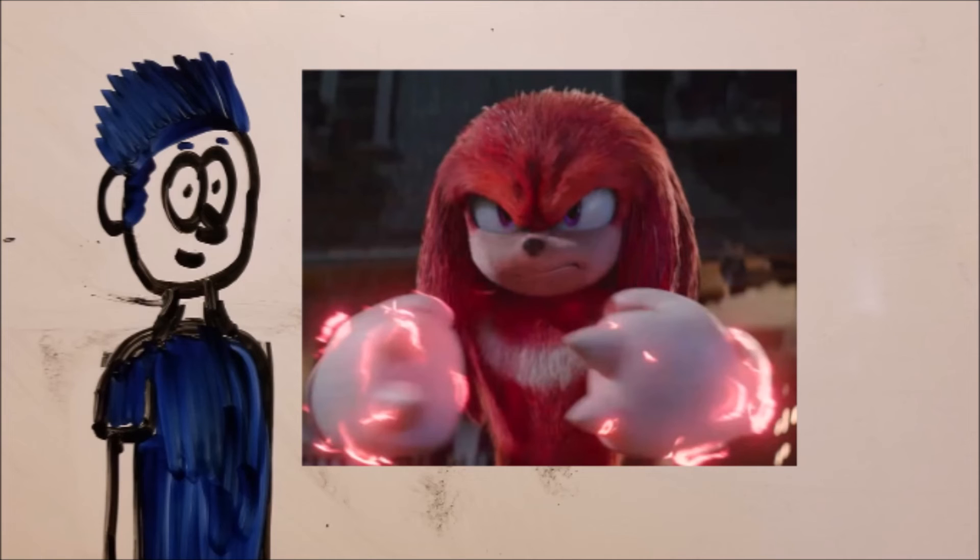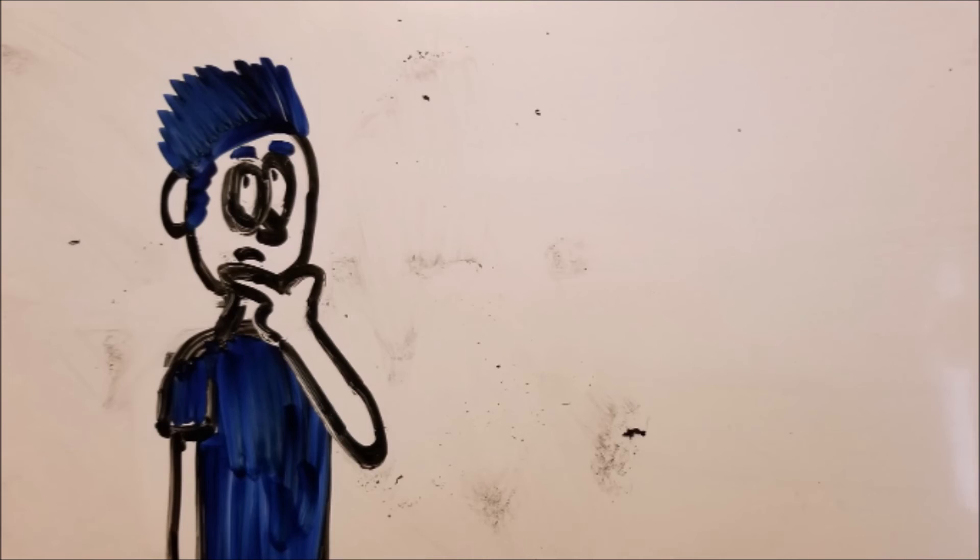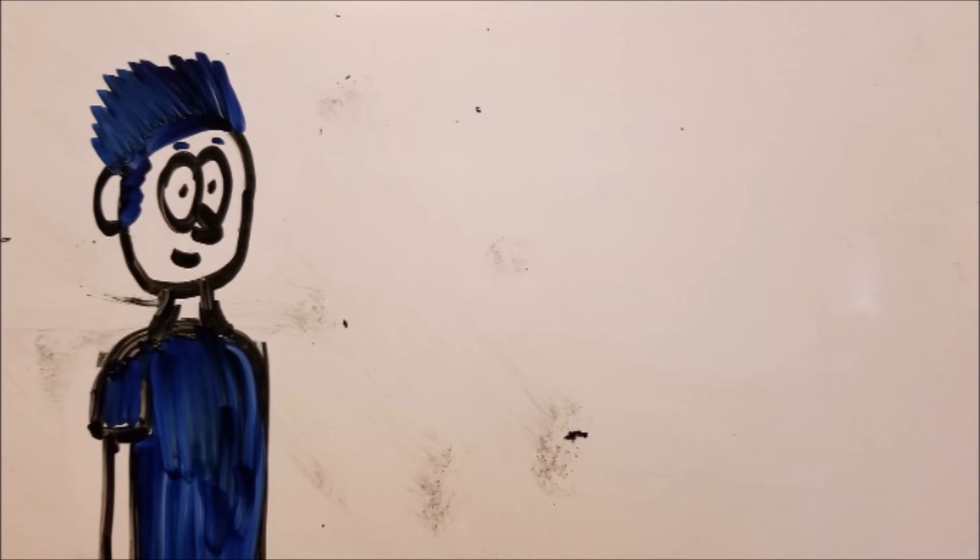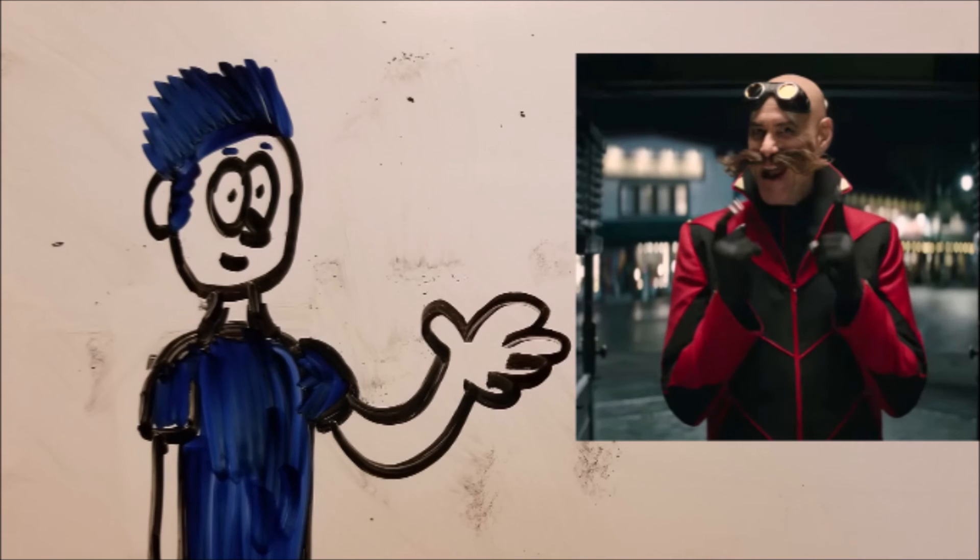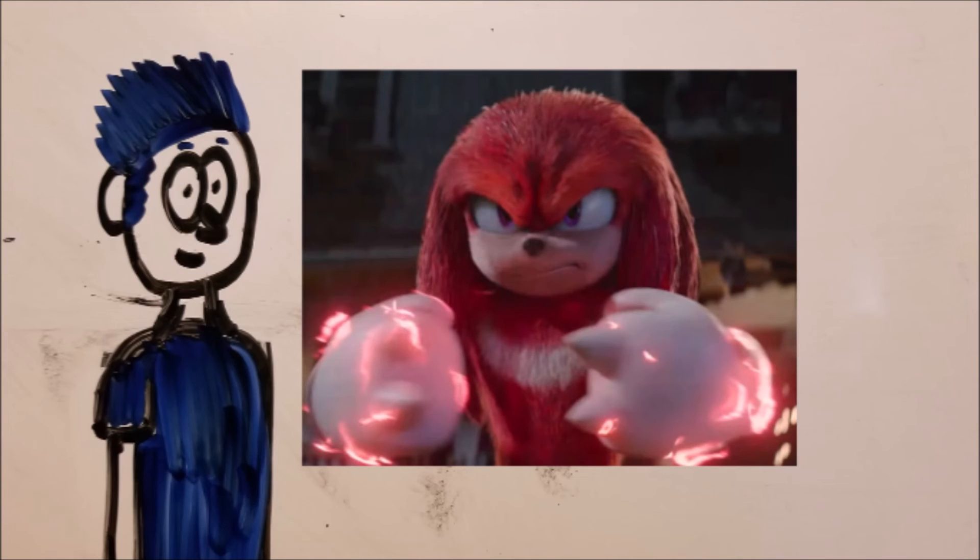Now some people will be asking why Knuckles is going against Sonic and why he is working with Robotnik in the first place. And well it all goes back to the video games. And that's pretty much how the relationship started because he was tasked to guard the Master Emerald and Robotnik uses that manipulation on Knuckles telling him that Sonic is the bad guy so they can work together to protect it from him. And that's why you see Knuckles going against Sonic working with Robotnik but he will most likely change his ways and become the good guy.